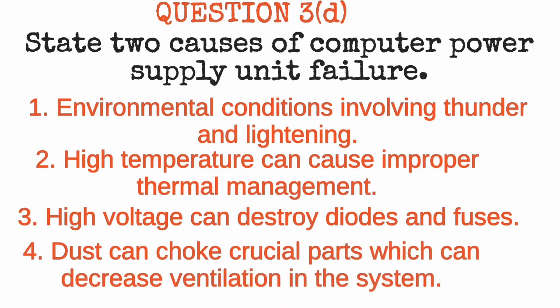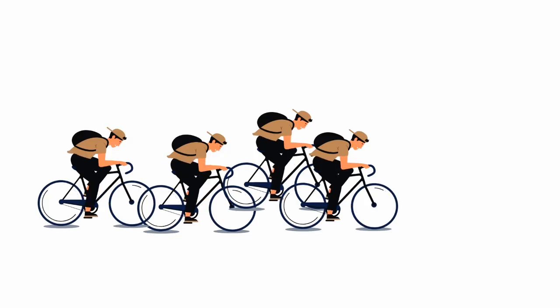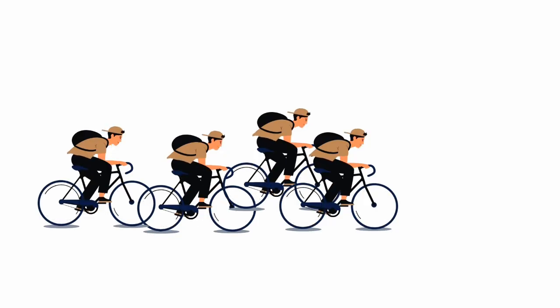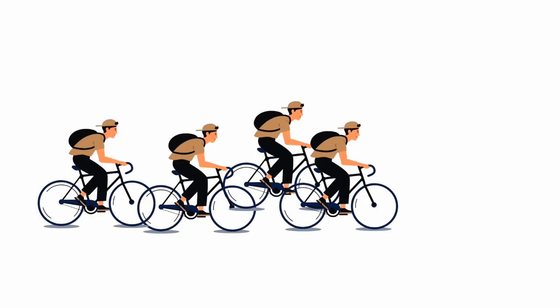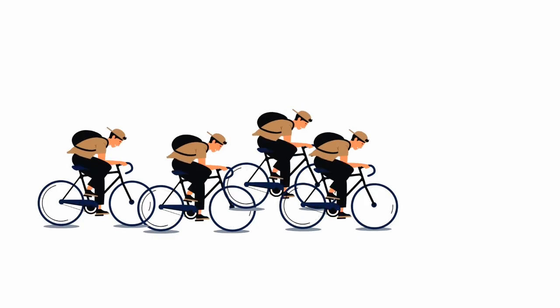If measures are not taken, high voltage can destroy electrical appliances including the computer power supply unit. Dust can also choke crucial parts, decreasing ventilation in the power supply unit system. Extra measures must therefore be taken to prevent computer power supply unit failure. Please like this video, comment below, and subscribe to this YouTube channel — thank you very much.